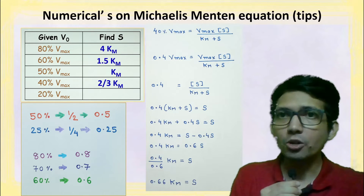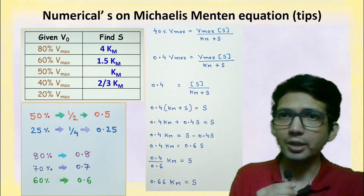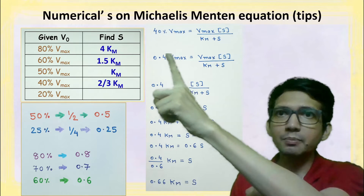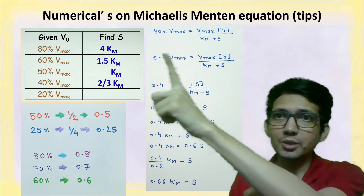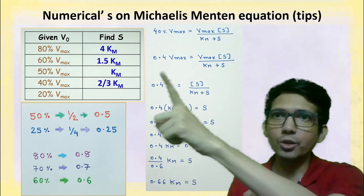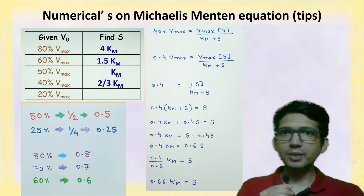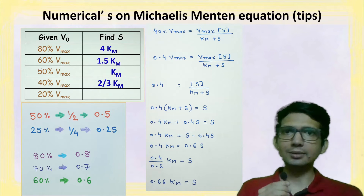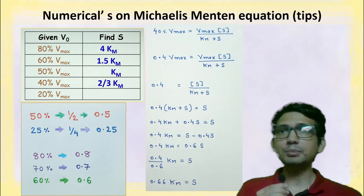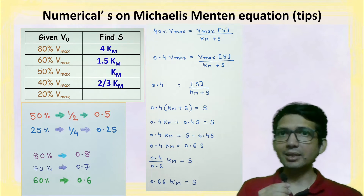Next, the given value of v0 is 40 percent of vmax. In the equation, v0 is written as 0.4 vmax. Solving this gives 0.6 km equals s. This means if the substrate concentration is equal to 0.6 times the value of km, then the velocity will be 40 percent of vmax.